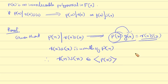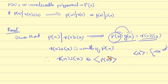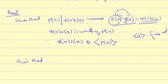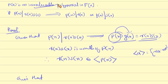The ideal generated by p(x) is the set of all multiples of p(x). This means r(x) times s(x) belongs to the principal ideal generated by p(x). Since p(x) is an irreducible polynomial,